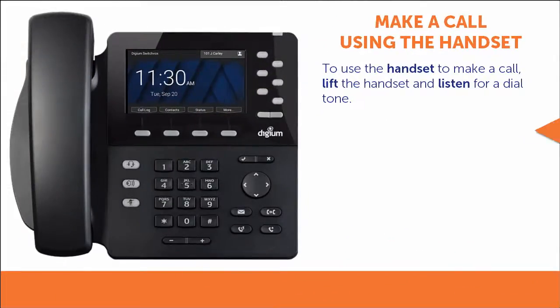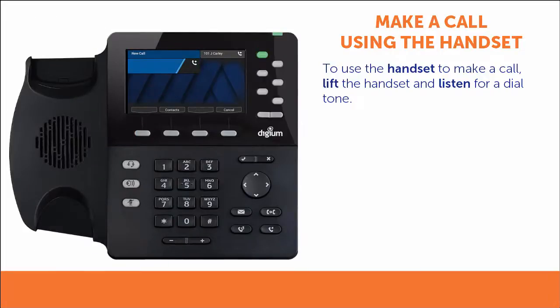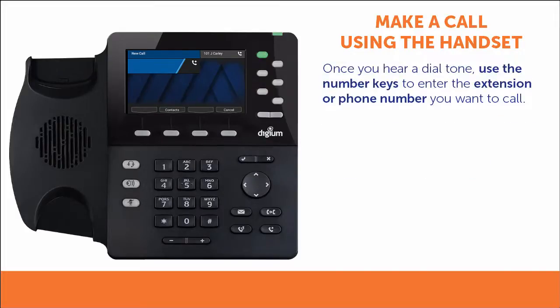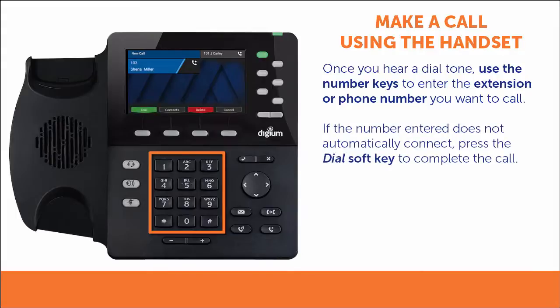To make a call using the handset, lift the handset and listen for a dial tone. If you do not hear a dial tone, your phone may not be registered to your PBX. Please contact your network administrator for assistance. Once you hear the dial tone, use the number keys to enter the extension or phone number you want to call. Your Digium Phone is configured to dial some numbers automatically, just like a traditional telephone.